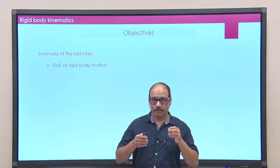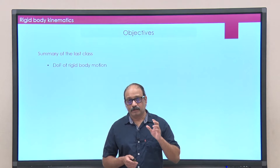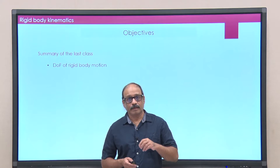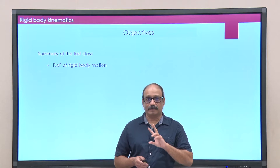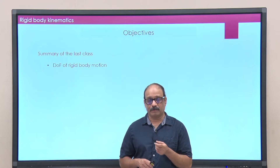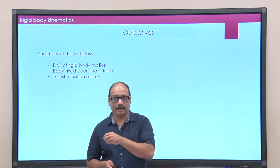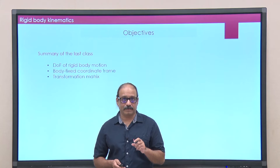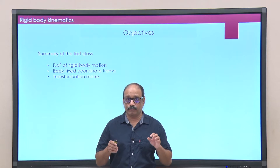We devised a scheme where you fix one point of the rigid body and attach a coordinate system to it. As the rigid body moves in space, the point where we put the origin of the body-fixed frame moves, and the coordinate frame attached to the body also moves with it. If this coordinate system has three unit vectors i', j', and k', we look at the transformation matrix between the body-fixed frame and the space-fixed frame. This transformation matrix is orthogonal and requires only three parameters.